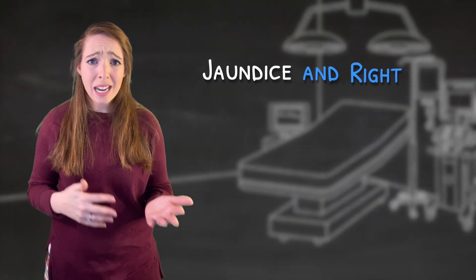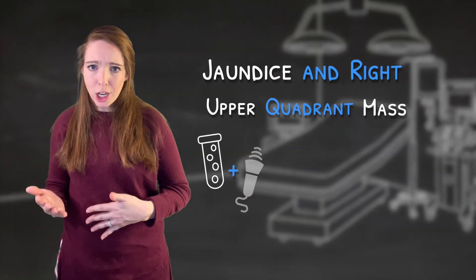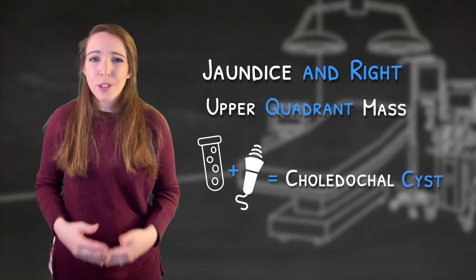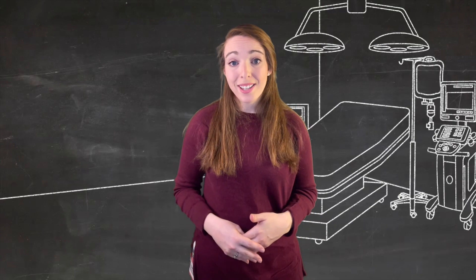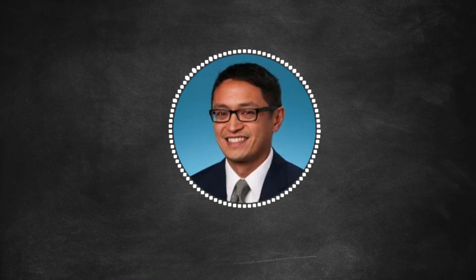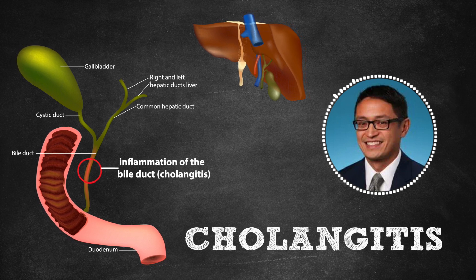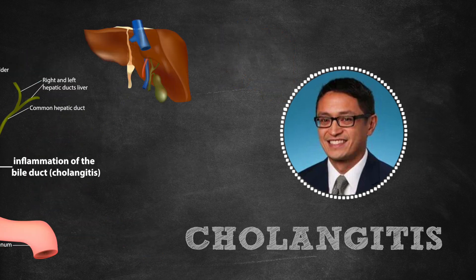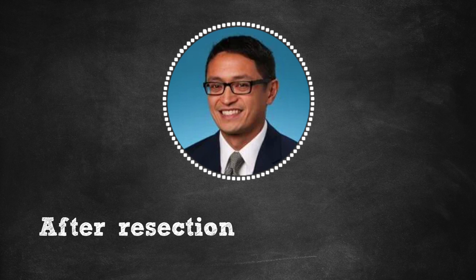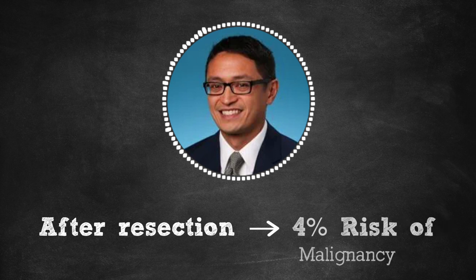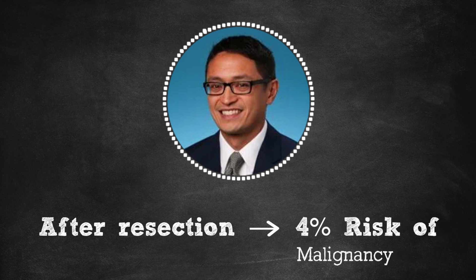Let's say a patient comes in with jaundice and a palpable right upper quadrant mass. We get the labs, we get the imaging, and we diagnose a choledochal cyst. Surgery is really the only true treatment option, both to correct the aberrant anatomy and to prevent long-term complications. The significant complications you're trying to prevent include cholangitis from biliary stasis, the risk of biliary cirrhosis and hepatic failure, and the really pressing concern — the risk for developing cholangiocarcinoma, which according to some studies can be as high as 26 percent. Even after surgical resection, some studies suggest there is still about a four percent lifetime risk of malignancy, which means these patients need to be surveilled through their lifetime.